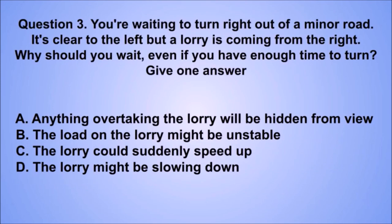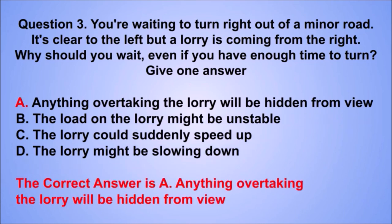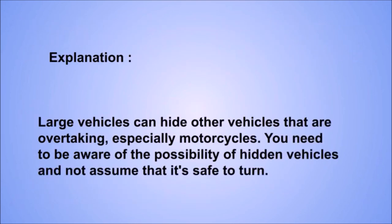Question 3. You're waiting to turn right out of a minor road. It's clear to the left but a lorry is coming from the right. Why should you wait even if you have enough time to turn? The correct answer is A: Anything overtaking the lorry will be hidden from view. Large vehicles can hide other vehicles that are overtaking, especially motorcycles. Don't assume it's safe to turn.